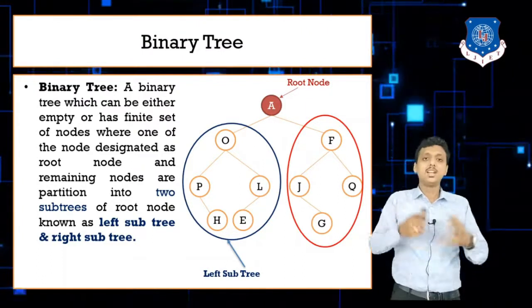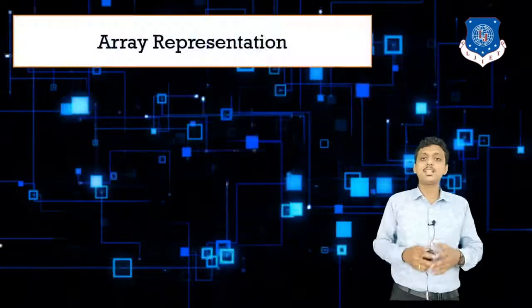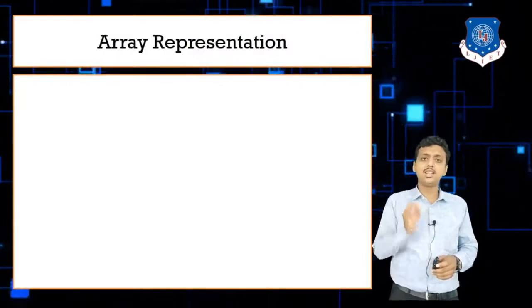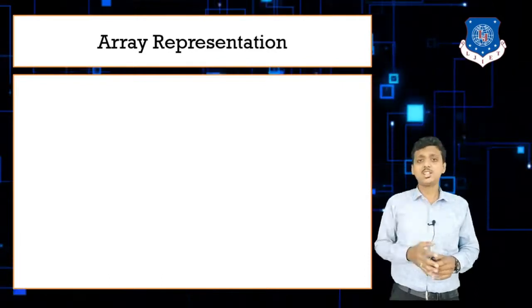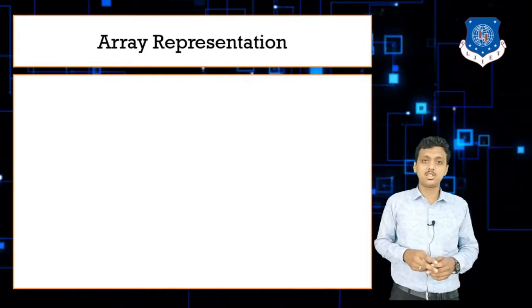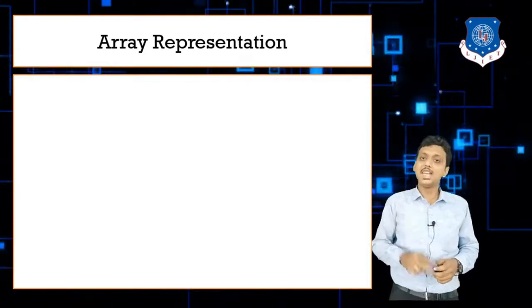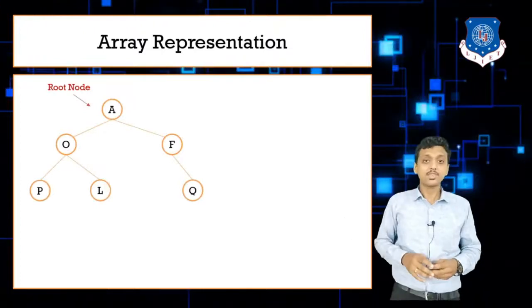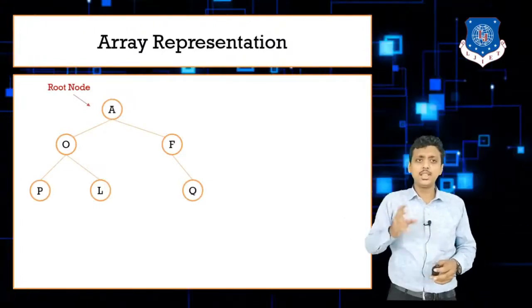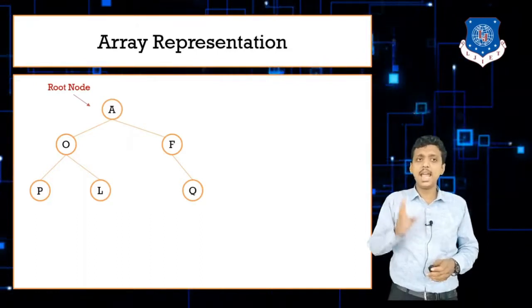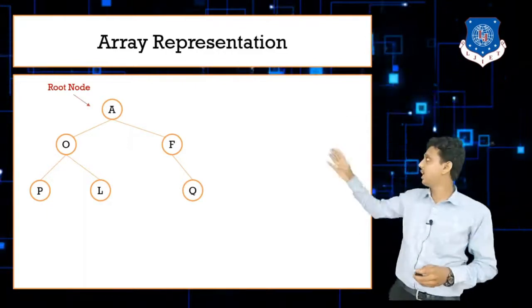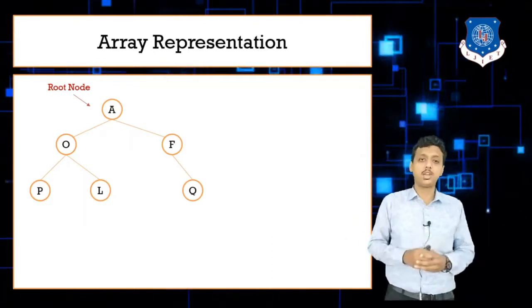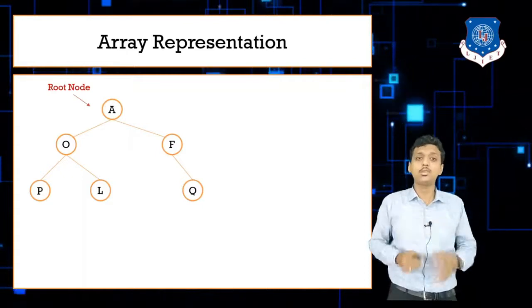Each and every data structure can be represented using either an array or a linked list. Here we'll represent our tree using an array. The tree has root A, with nodes O, F, P, L, and Q. The height of this tree is two.